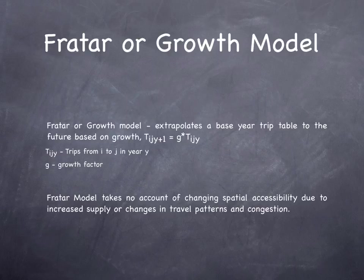Historically, the fretter, or growth, model was used. If you know today's demand and you know the rate of growth — so a growth factor of 1.02 represents 2% growth — next year's demand is just the product of the two. This practice is still used in rural areas, but has obvious problems since it takes no account of the structure of the problem.